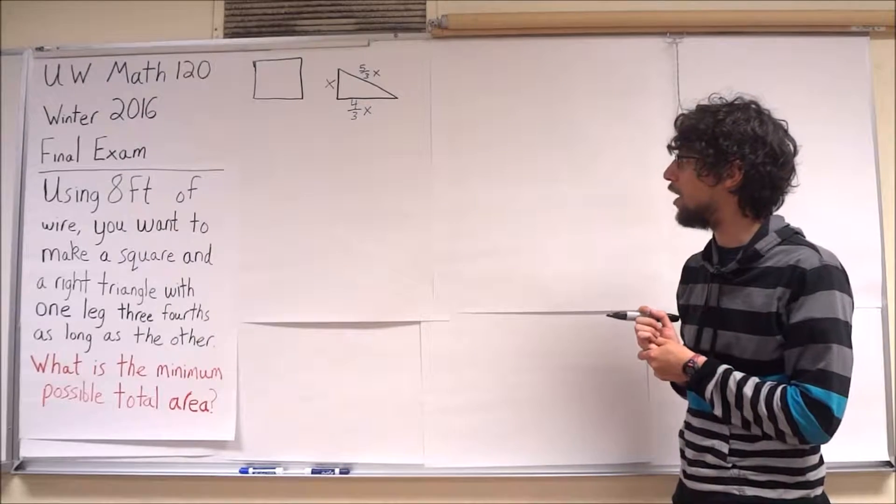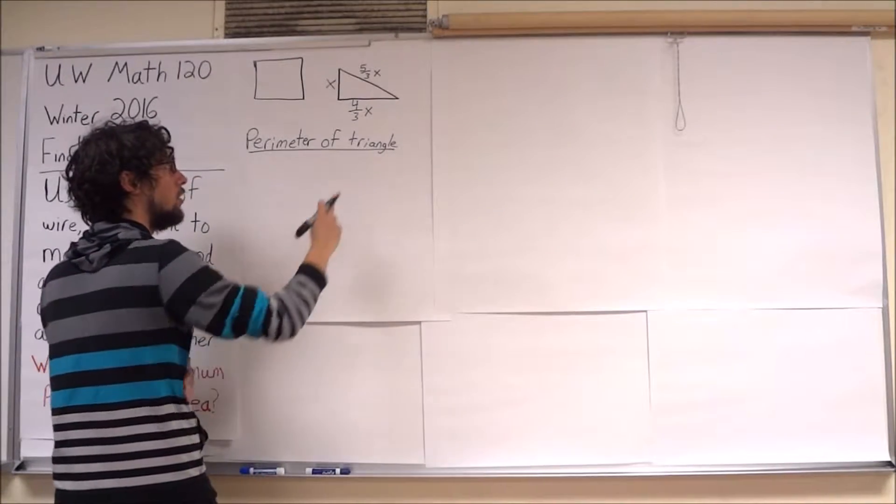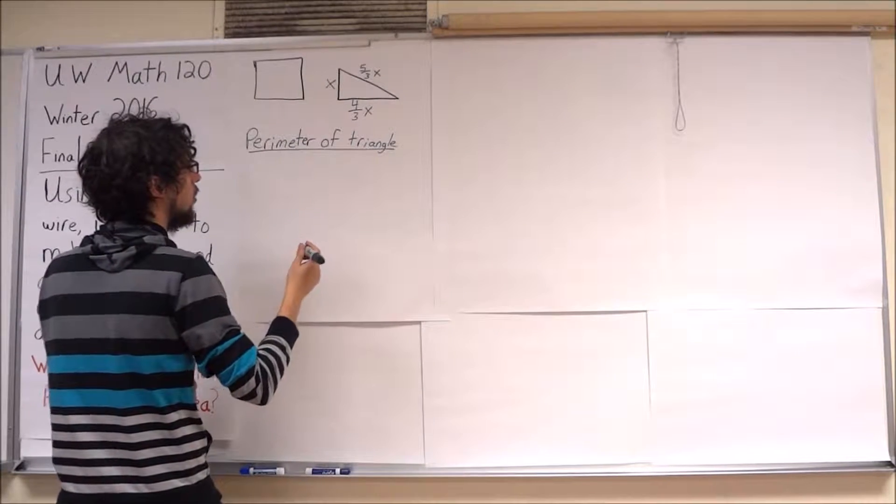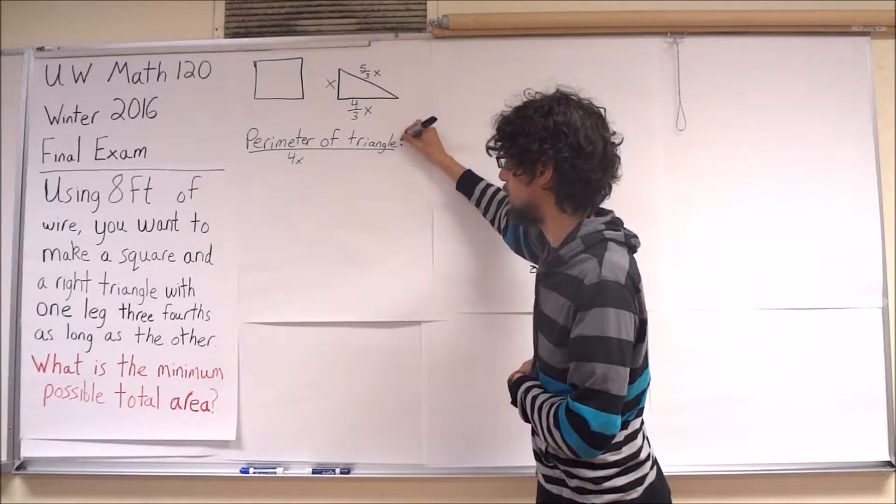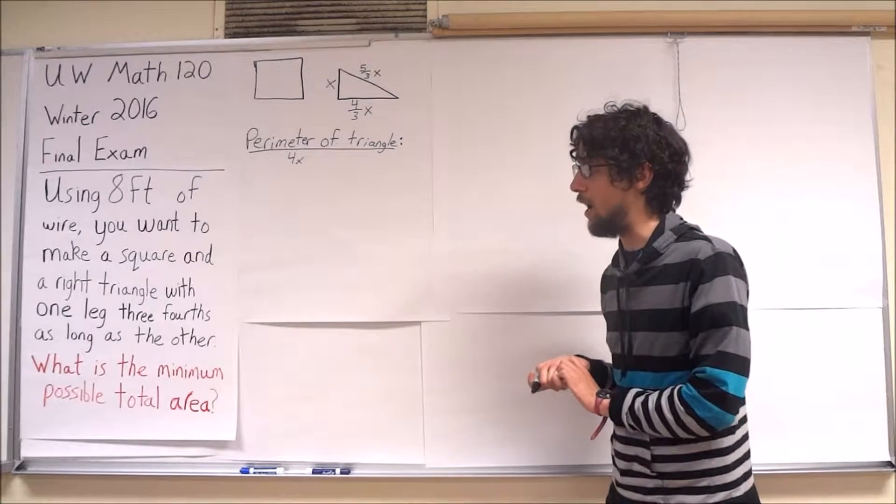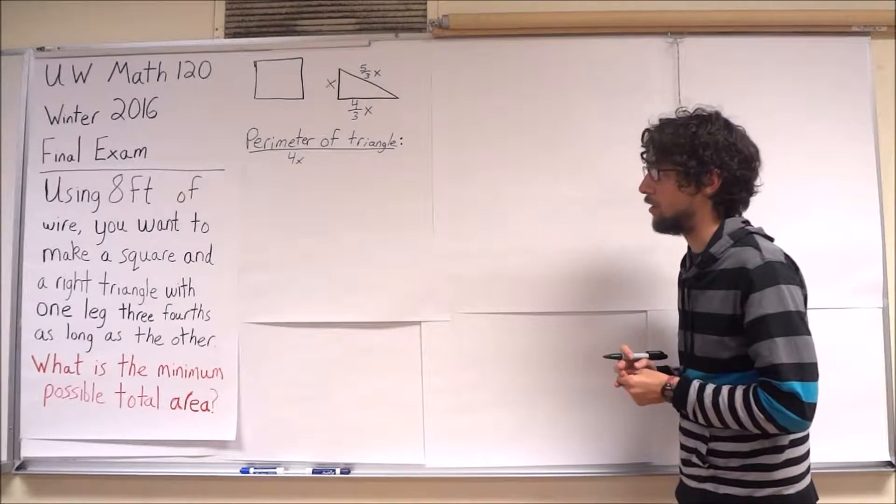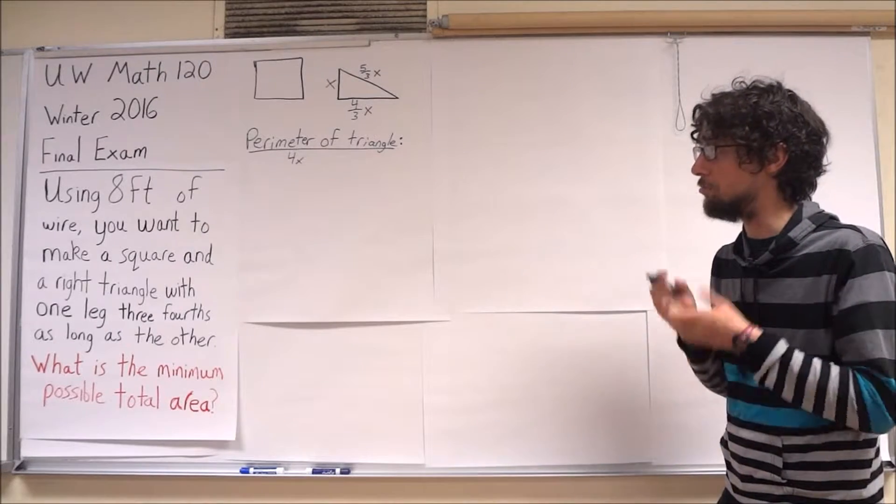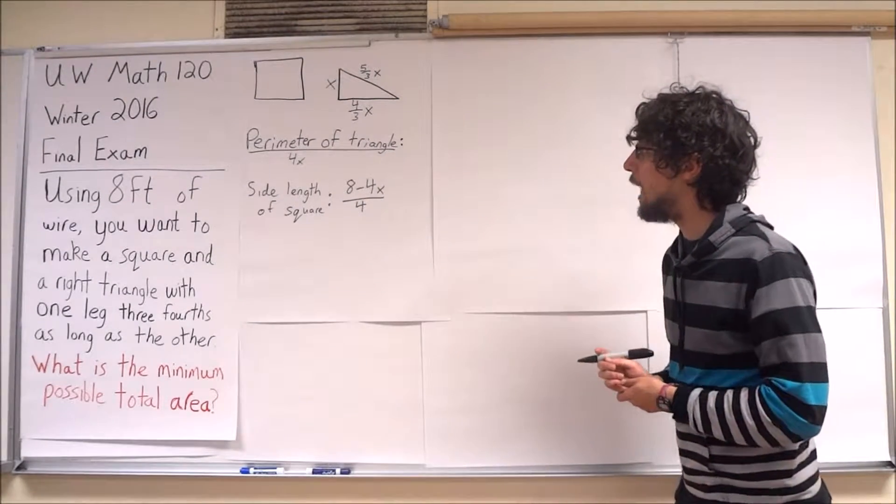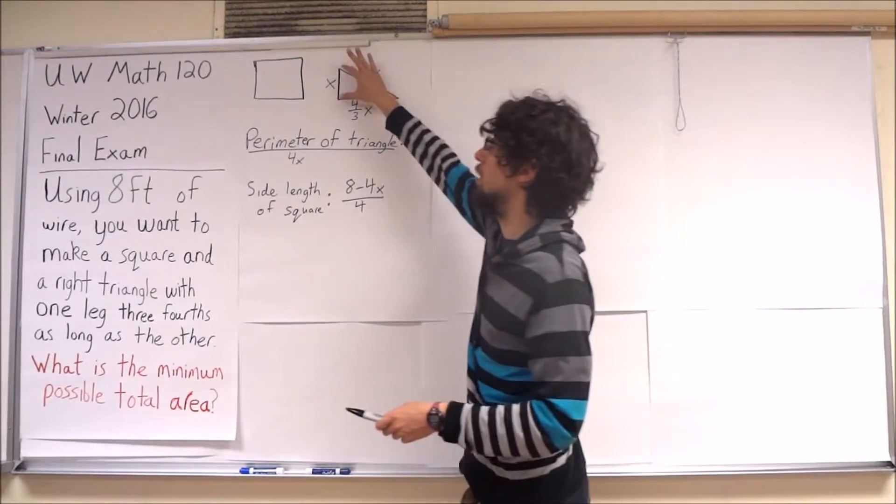In particular, how much of my wire have I used on the right triangle? The perimeter of my triangle is 4/3x and 5/3x plus x, which makes a total of 4x. Note that this is not a fraction - the perimeter of my triangle is 4x. I'm going to use the entire remainder of my wire on the square. So the perimeter of my square will be 8 minus 4x, and the side length will be a quarter of that. Now I know the dimensions of my square and triangle expressed solely as a function of this choice of x.